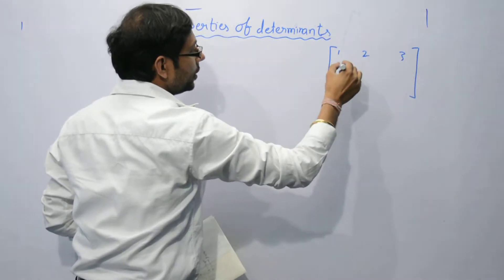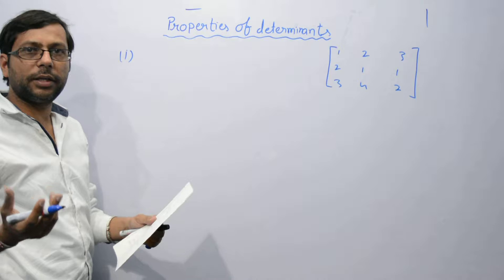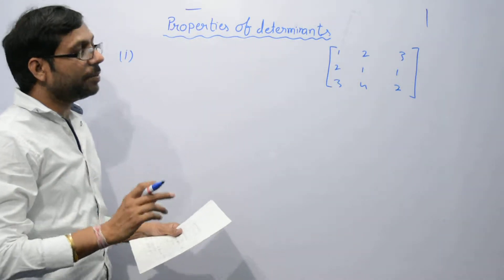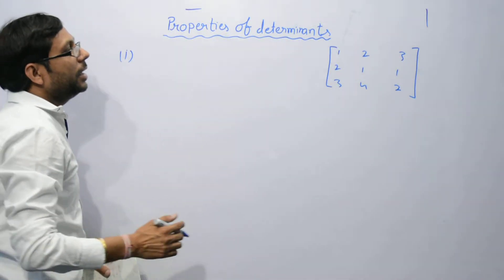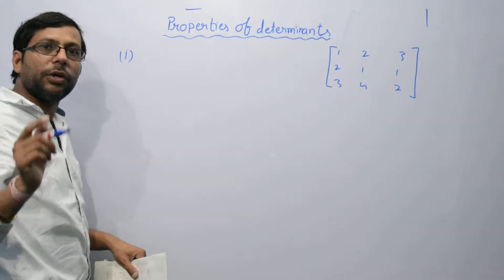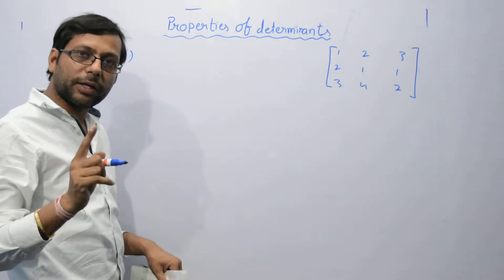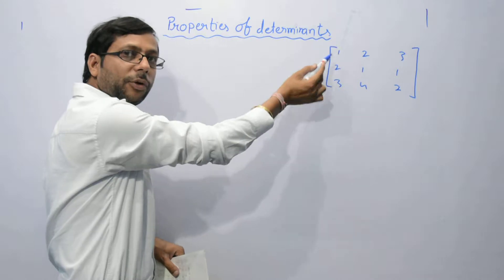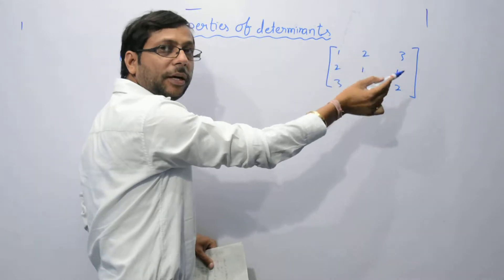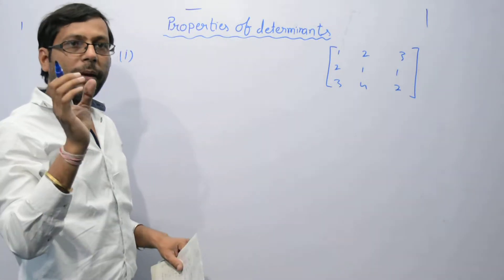The matrix has elements 1, 2, 3 in the first row, then 2, 1, 1, and 3, 4, 2. Generally there is a matrix, and if we talk about the determinant of this matrix, we will discuss the property. In the first row, that will give you the determinant. Mathematically, I am talking about the first row.